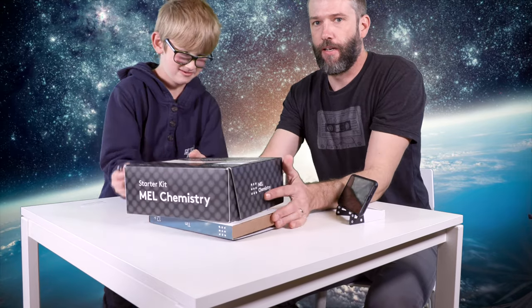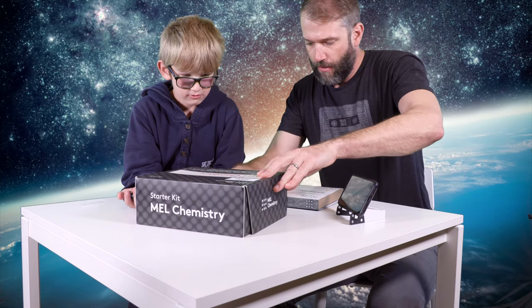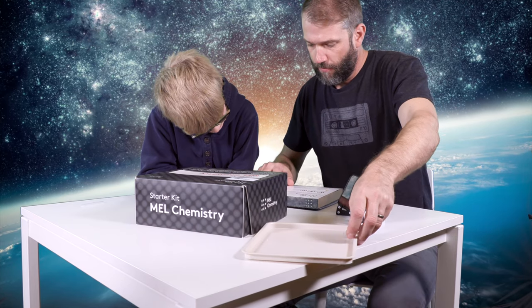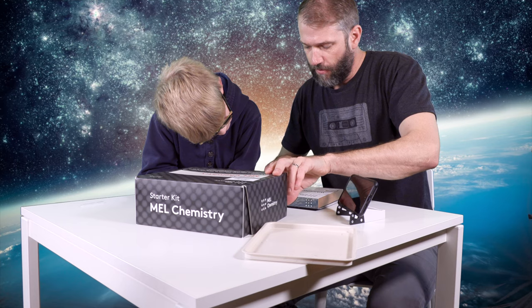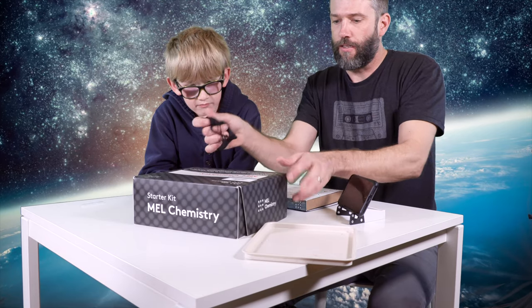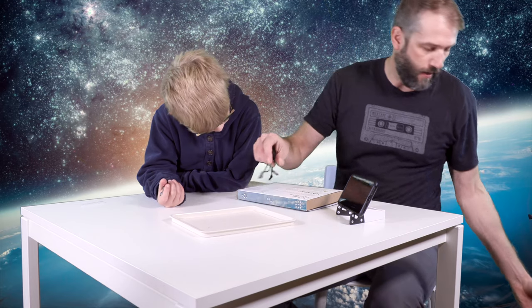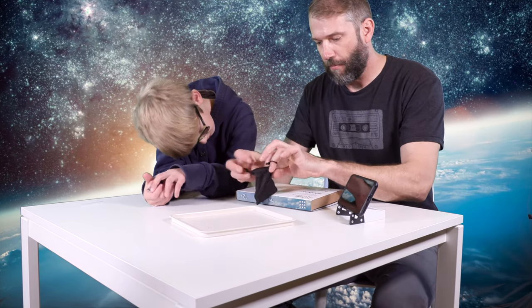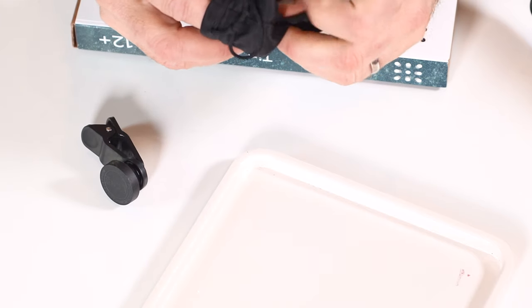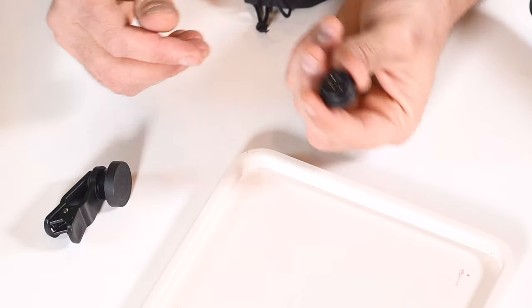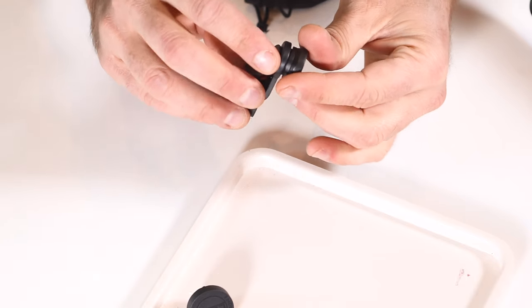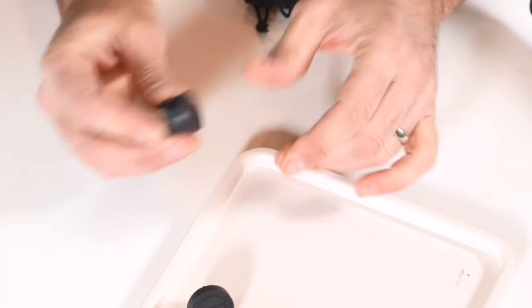Now the starter kit is what they send you when you first subscribe to the box kit and it's a basic set of labware and supplies. The items that we need are going to be the plastic tray, safety glasses, and the smartphone clip-on macro lens. So that's this. That's all we need from the starter kit. So we'll put the tray there. The smartphone clip-on macro lens comes with this little alligator clip.